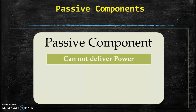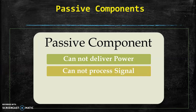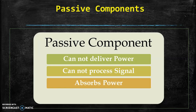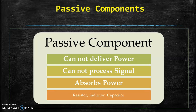Passive components are those components which cannot deliver power, which cannot process the signal, and passive components absorb power. The examples of passive components are resistor, inductor and capacitor. Resistor is an energy dissipating type of device and inductor and capacitor both are energy storage type of device.